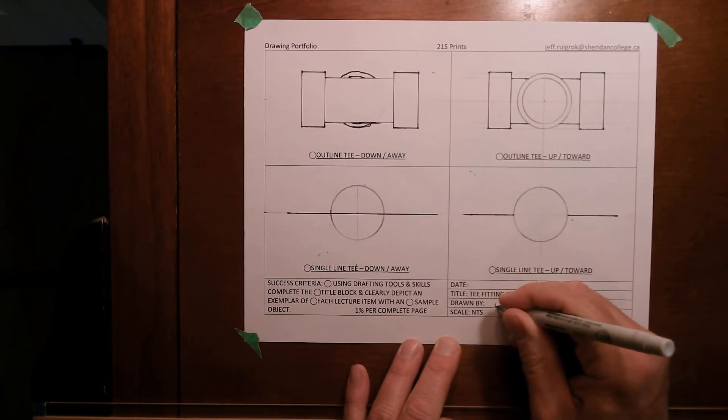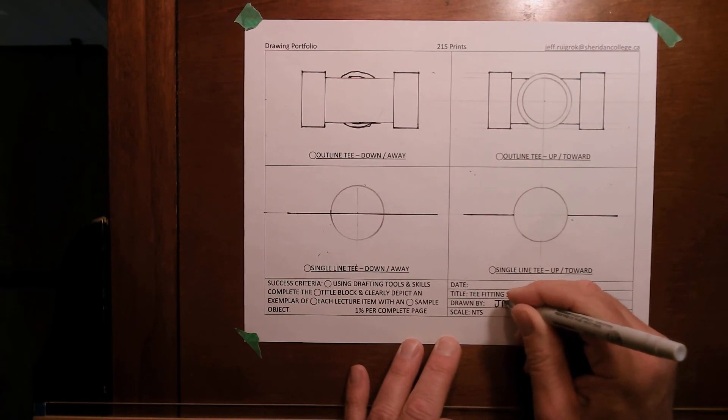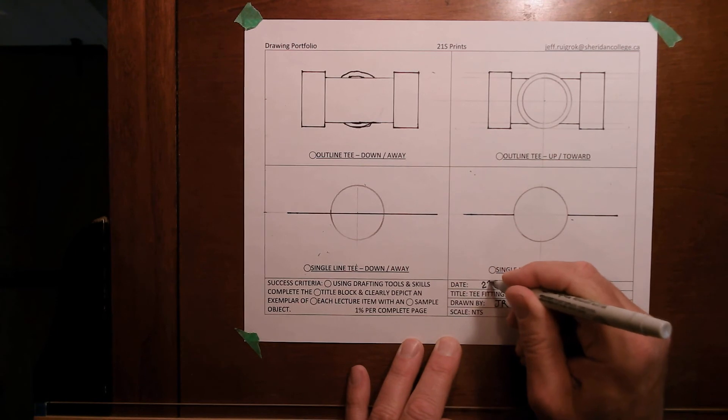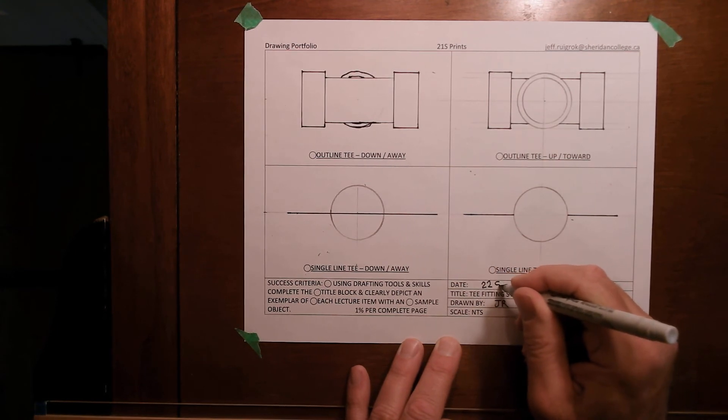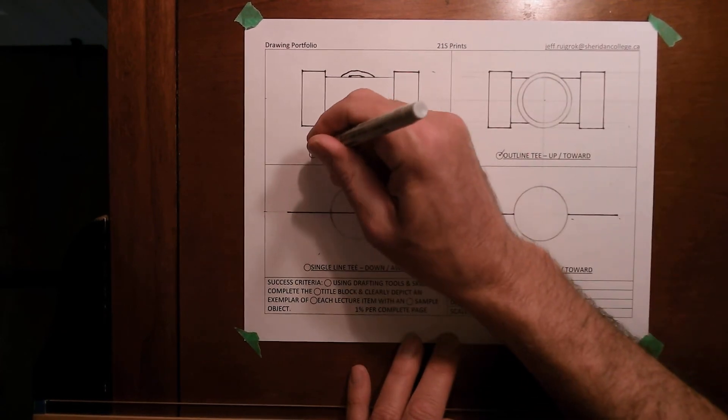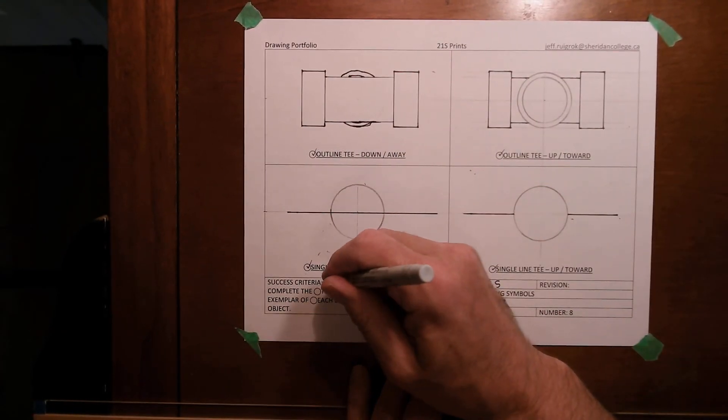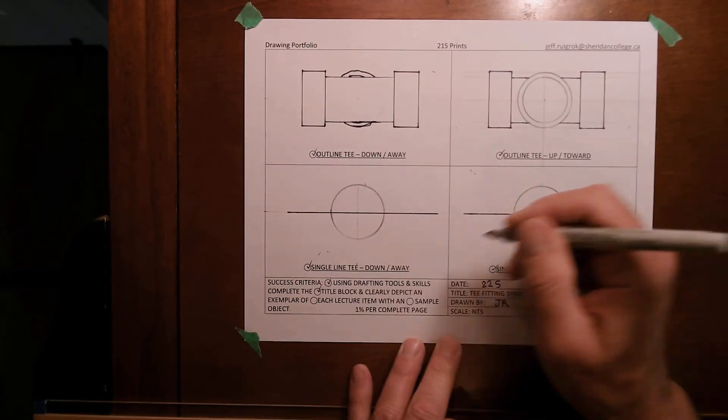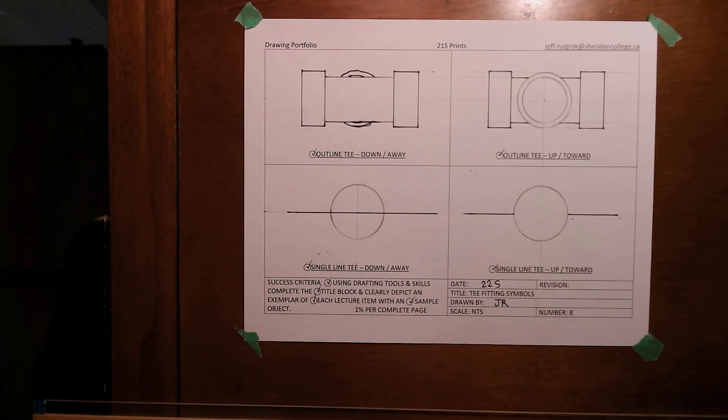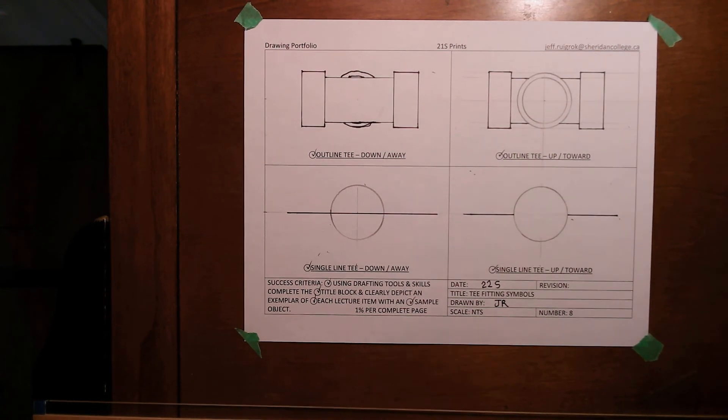Make sure you put your name and the date. And then go ahead and check off all the items when you've done them. Drafting tools, title block, extra items and samples of each. There we go. So I'll finish that up and that's it for now.